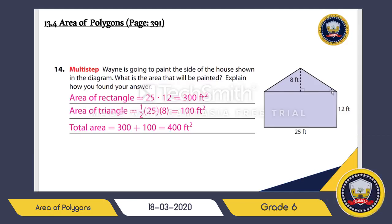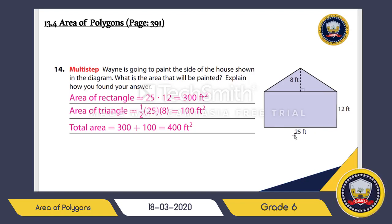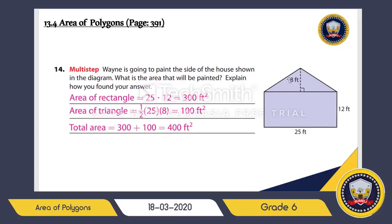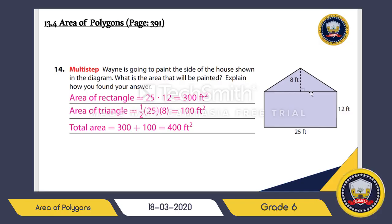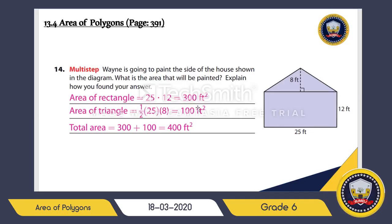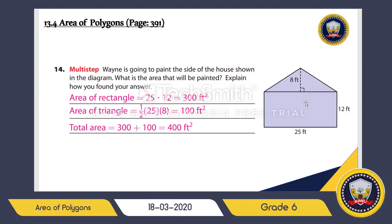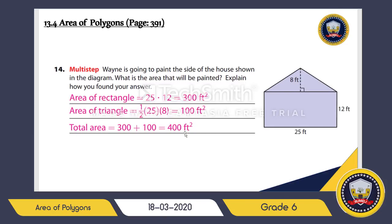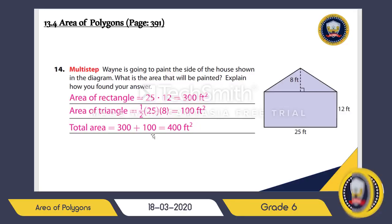The area rules are applied to each shape. The area of the rectangle is length times width: 25 times 12, which is 300 square feet. For the triangle, the base is the same as the rectangle — 25 feet — times the height of 8, divided by 2, which gives us 100 square feet. The total area is 300 plus 100, that is 400 square feet. So the total area that Wily is going to paint is 400 square feet.